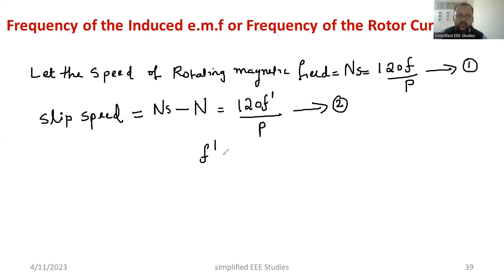Where F dash is known as the frequency of rotor current, frequency of rotor current. Now, what you can do is, divide equation 2 and 1.